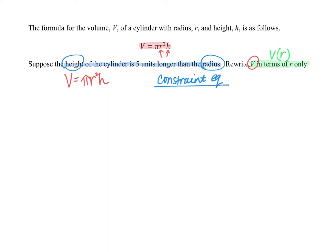Reading that sentence again and trying to write a mathematical equation that corresponds, it says that the height of the cylinder h is 5 units longer, so that would be 5 units more than the radius. That translates to h equals 5 plus r.